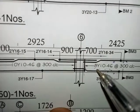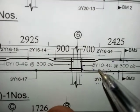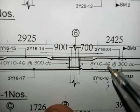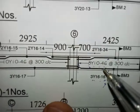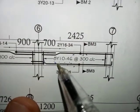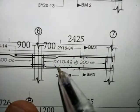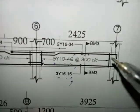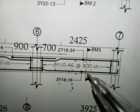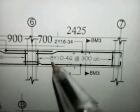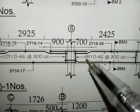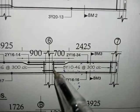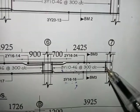The numbers shown here indicate the number of stirrups from here to here, and the number of stirrups from here to here.